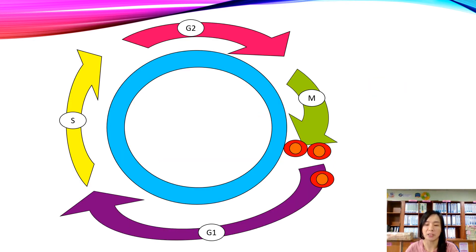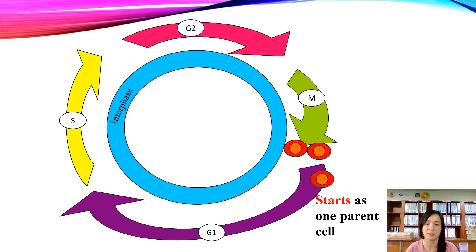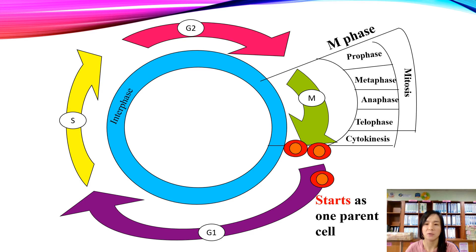Looking at this animation: the cell starts with one parent cell. This parent cell will undergo interphase — G1, then S phase, then G2 phase. After finishing interphase, the cell will enter M-phase, which consists of mitosis and cytokinesis — prophase, metaphase, anaphase, telophase, and finally cytokinesis. After cytokinesis, two daughter cells are formed.